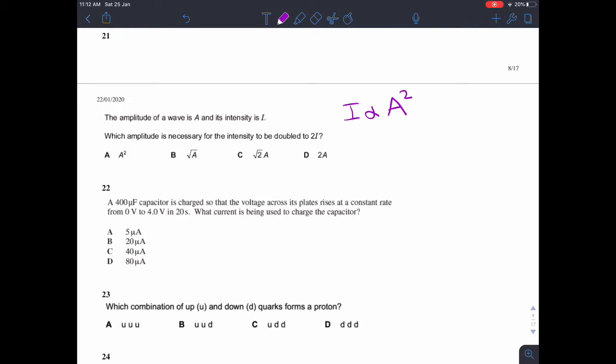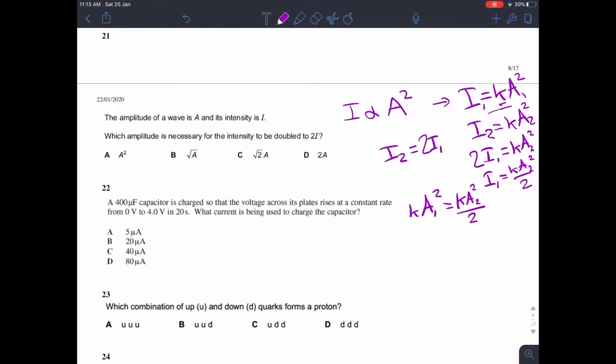In the second scenario, we want to find out what 2I would be, but if we rewrite this as I equals KA squared, where K is some kind of constant, then we can rewrite the second one as, if we make that I1 and that A1, then I2 equals KA2 squared. And we know that I2 equals 2I1, so then we could say 2I1 equals KA2 squared.